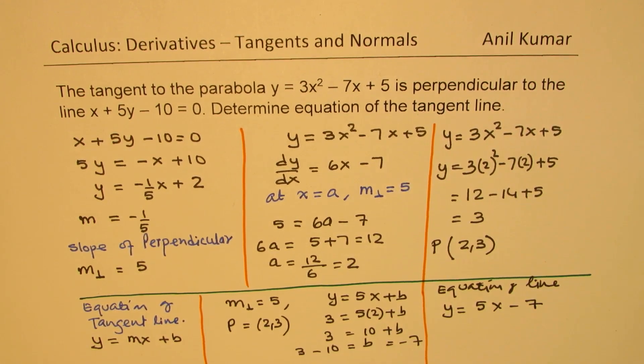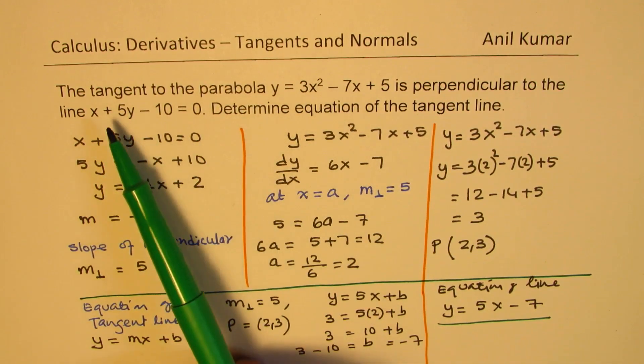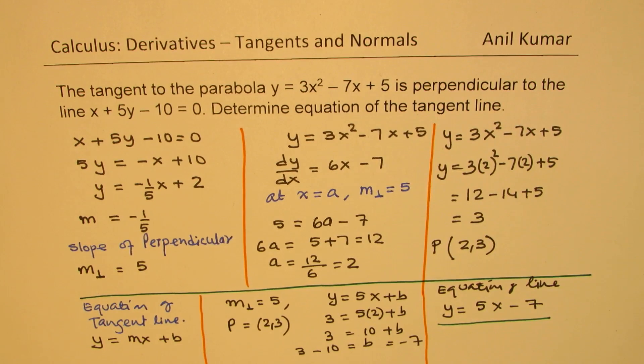Is that clear to you? So, that is how we are going to find equation of tangent line, which is tangent to the given curve and is perpendicular to the given line. Perfect. This is a very important example from test point of view. I like you to go through it once again, understand all these steps.